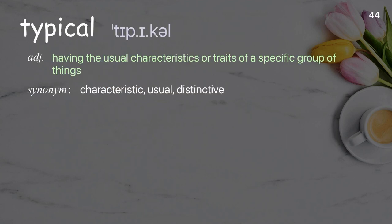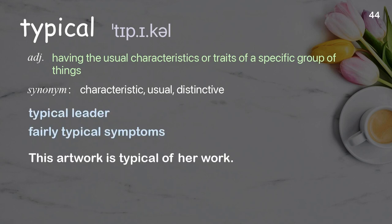Typical. Having the usual characteristics or traits of a specific group of things. Examples: typical leader, fairly typical symptoms. This artwork is typical of her work.